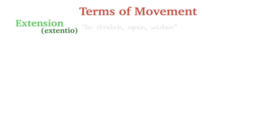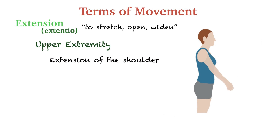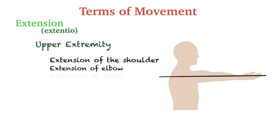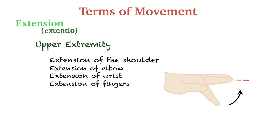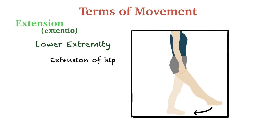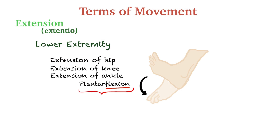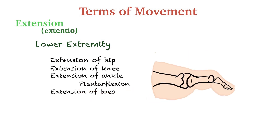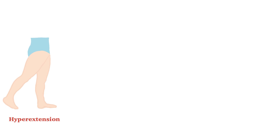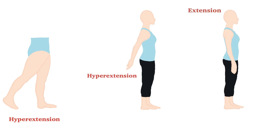Extension — the term extension means to stretch, open, or widen. This expresses the increasing angle between relevant bones or parts in the joint. Basically, the bones in the joint move away from each other. For the upper extremity: extension of the shoulder, extension of the elbow, extension of the wrist, and extension of the fingers. For the lower extremity: extension of the hip, extension of the knee, and extension of the ankle, which is also known as plantar flexion. In some sources, plantar flexion is known as foot extension — the flexion movement towards the sole (plantar part) is expressed as plantar flexion. Extension of the toes occurs towards the dorsum of the foot. If the extension movement exceeds its normal limits, this movement is called hyperextension. We see hip hyperextension, shoulder hyperextension, and vertebral column hyperextension.